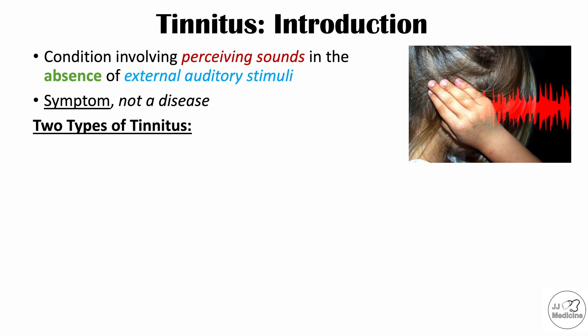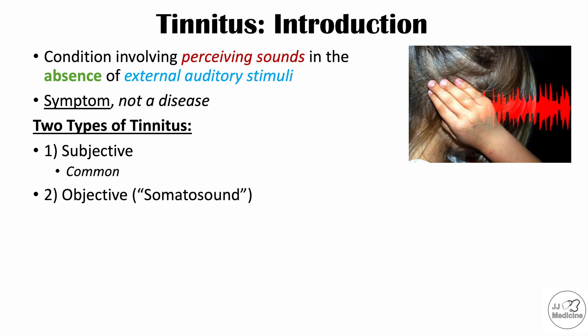There are actually two types of tinnitus. One type is known as subjective tinnitus, and this is the most common type. The second type is objective tinnitus, also known as somatosound, and this type is rare. We're going to talk about these two types in more detail and what are the common causes of each.